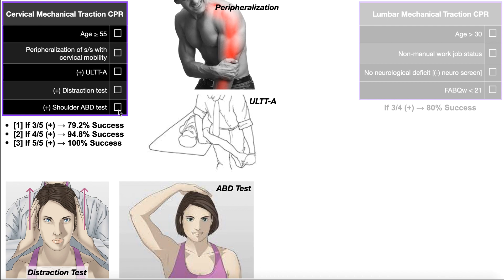Depending on how many of these five criteria are positive, we can predict how successful cervical mechanical traction will be. If three out of five are positive — any three — the likelihood that cervical traction will be beneficial is 79.2%, almost 80%, roughly four out of five patients. If four out of five are positive, there's a 94.8%, almost 95% success rate. And if all five are positive, it's virtually a 100% success rate.